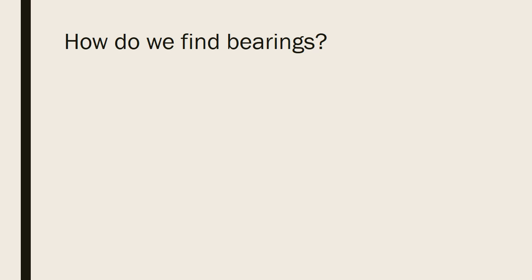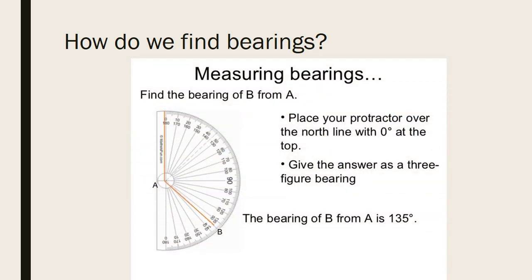So how do we find bearings? To find a bearing you must first place your protractor on the line or on the feature that is your starting point. In the example on the screen, you start with your protractor at zero and you will locate B, the point which you are trying to locate.